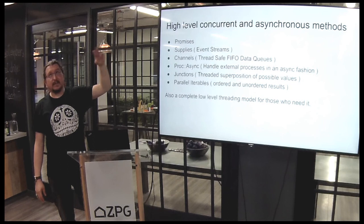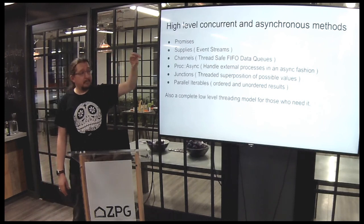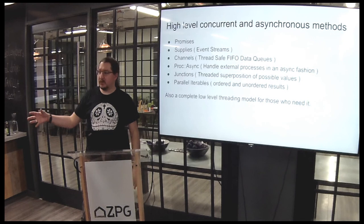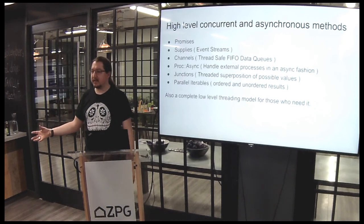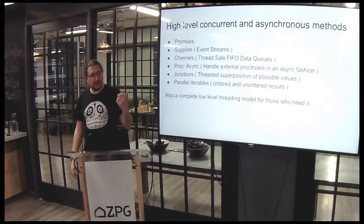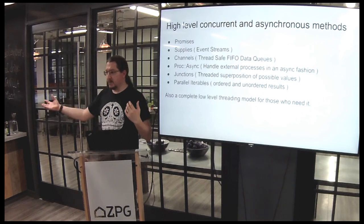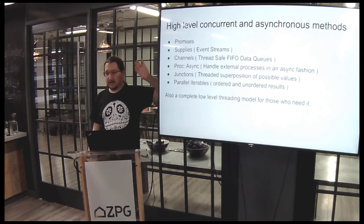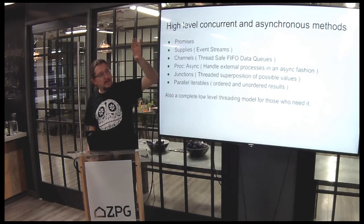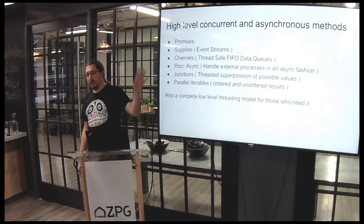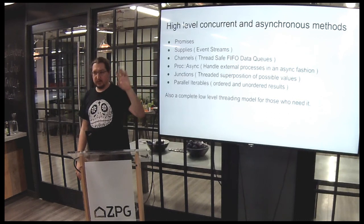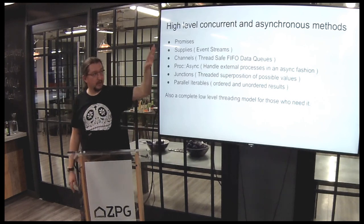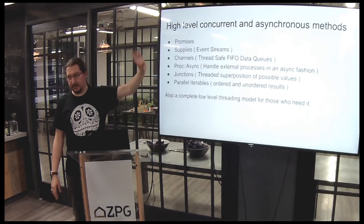ProcAsync is a module that allows you to make asynchronous calls to external processes. If you want to fire up an external process that's going to take a little bit of time and you want to keep an eye on it, you've got that built in. Perl 6 moves over to threads rather than forking, so don't do forking in Perl 6 — use the asynchronous and ProcAsync approach instead.